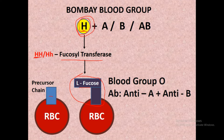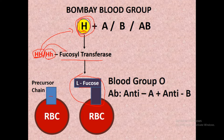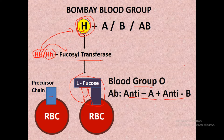The person who has a fully functional H gene — either homozygous HH or heterozygous Hh — has the necessary Fucosyltransferase activity. The person with blood group O has H substance on the surface of their RBC, and in their plasma there are antibody A and antibody B present, but no antigen A or antigen B.